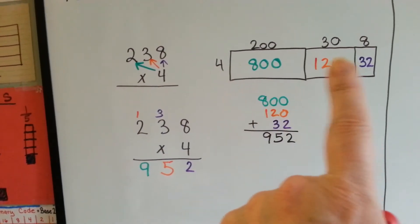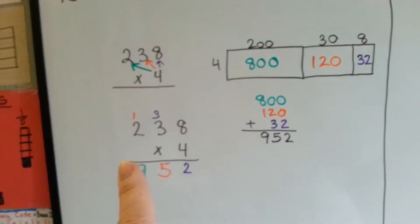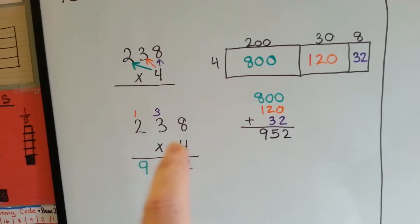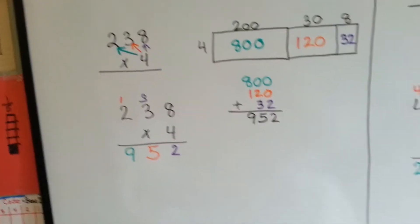This way, you're doing partial products. This way, we're distributing the 4 to each one. Alright? Let's try it again. A little bit bigger number.